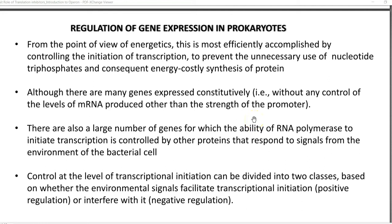There are also a large number of genes for which the ability of RNA polymerase to initiate transcription is controlled by other proteins that respond to the external signals of the cell. Control at the level of transcription initiation can be divided into two classes: based on whether environmental signals facilitate transcriptional initiation, which is referred to as positive regulation, or interfere with transcriptional initiation, which is called negative regulation.